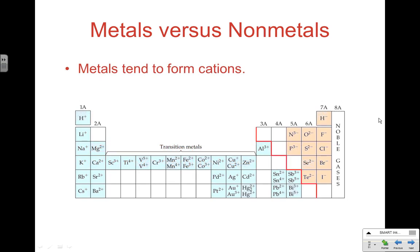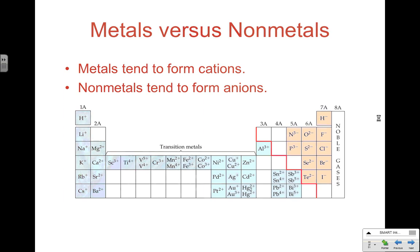Metals tend to form cations and nonmetals tend to form anions — that really splits them into where they are on the periodic table. The stuff on the left forms cations; the stuff in the upper right forms anions.